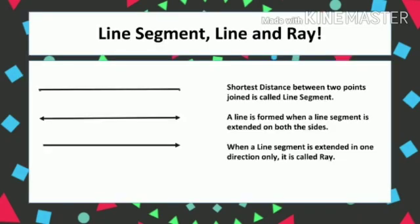There are three types of lines: line segment, line, and ray. What is a line segment? The shortest distance between two points joined is called a line segment. As you can see on the screen, there are two points joined by a single line — that is a line segment. Any two points joined by a line is called a line segment.